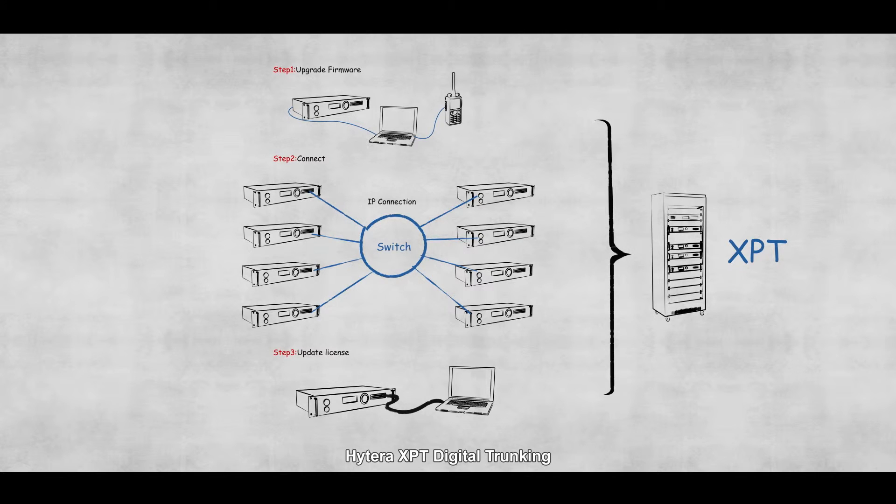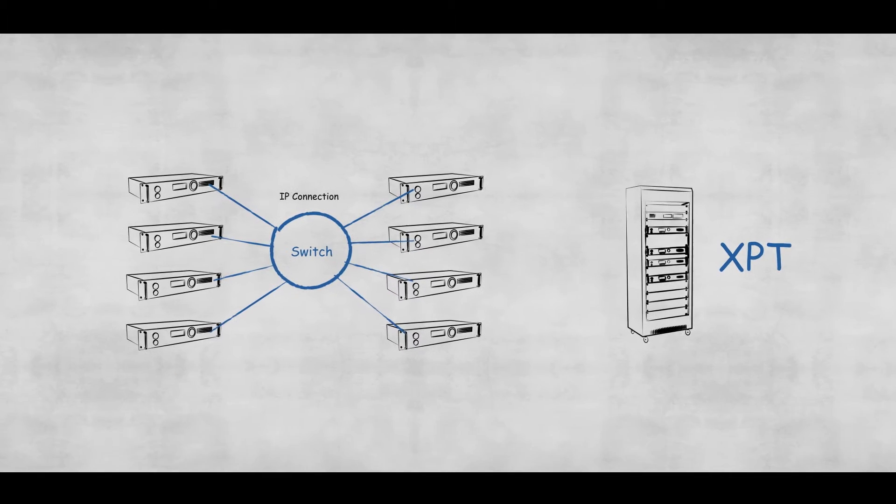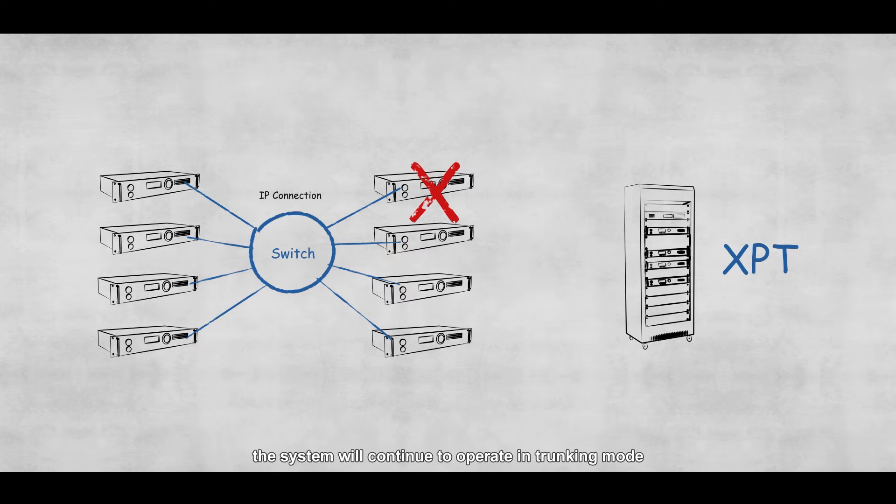Hytera XPT digital trunking supports two-level fail-safe control. If one or more repeaters fail on the system, the system will continue to operate in trunking mode.